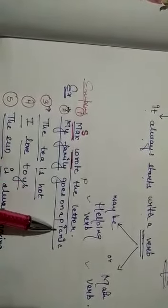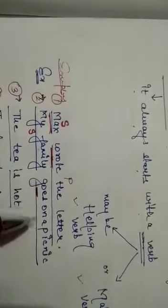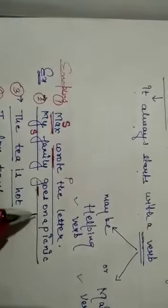My family goes on a picnic. Subject is my family. Family is performing a verb. That is goes. And the part which is telling us about the subject is the predicate.